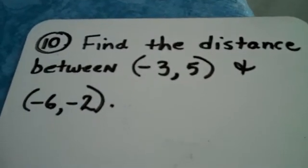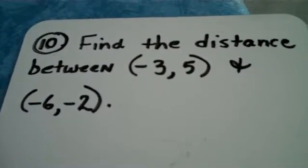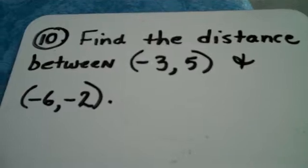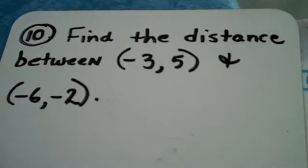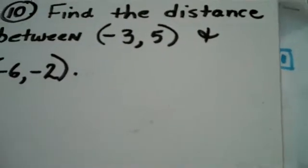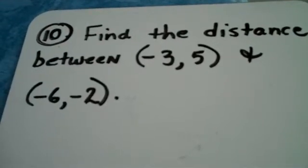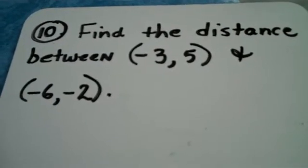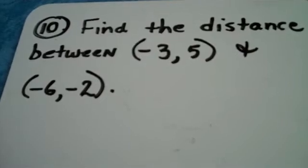Alright, question number 10 on the Math 1105 Final Exam Review wants me to find the distance between the two ordered pairs, negative 3, 5, and negative 6, negative 2.